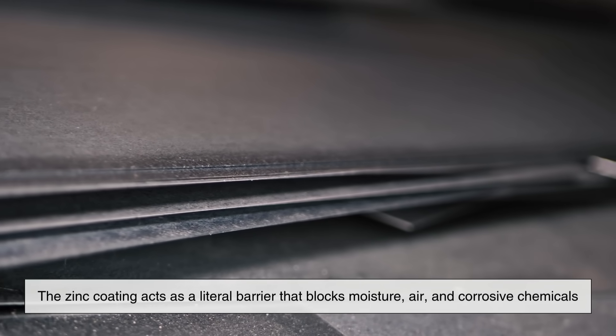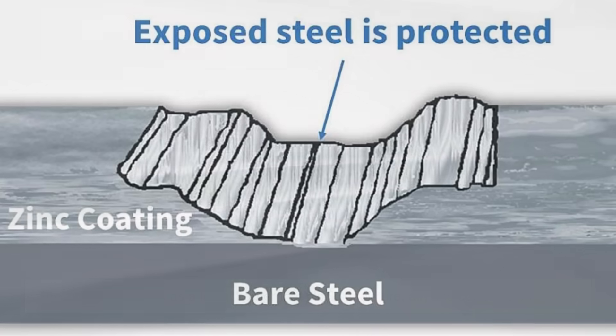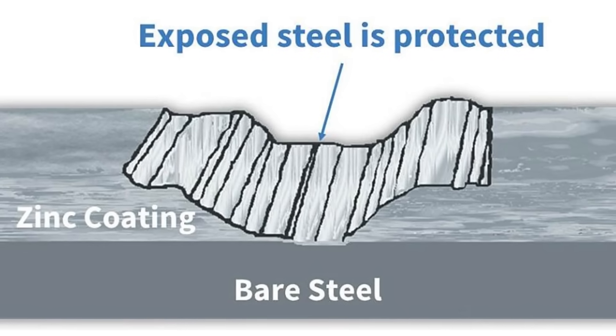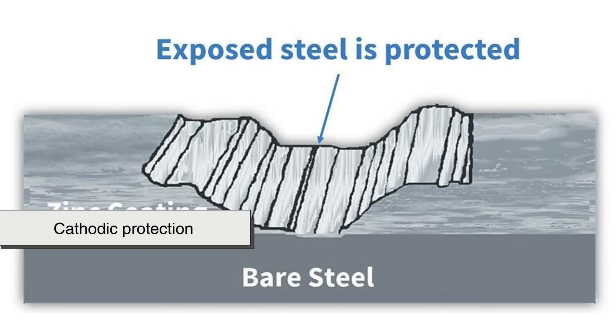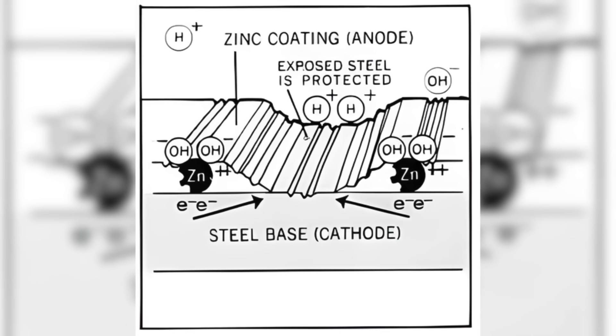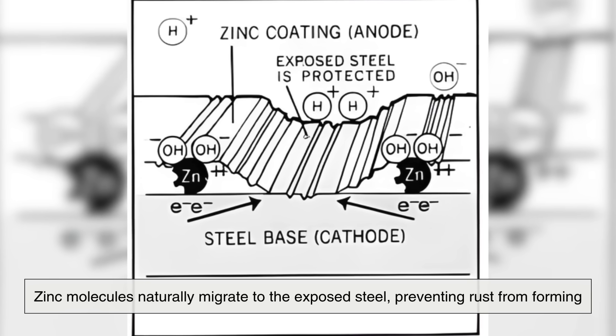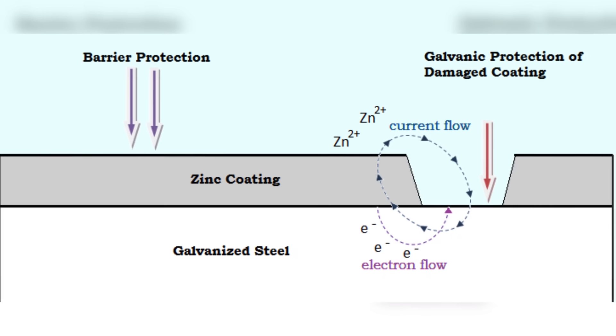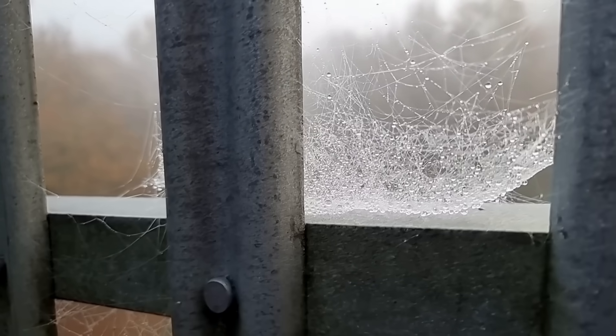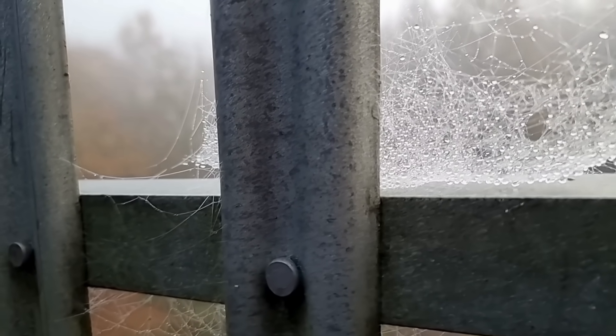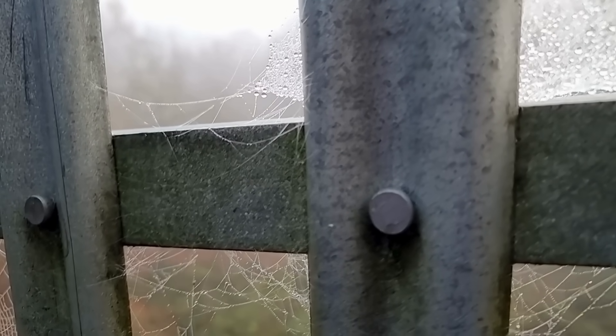The zinc coating acts as a literal barrier that blocks moisture, air, and corrosive chemicals. But what makes this even better is the previously mentioned sacrificial action, known scientifically as cathodic protection. If the coating is damaged or scratched, zinc molecules naturally migrate to the exposed steel, preventing rust from forming. It's like having an automatic self-healing defense system built into the metal. This is something regular paints or coatings can't do. Once they chip or peel, moisture gets in and the corrosion process begins.